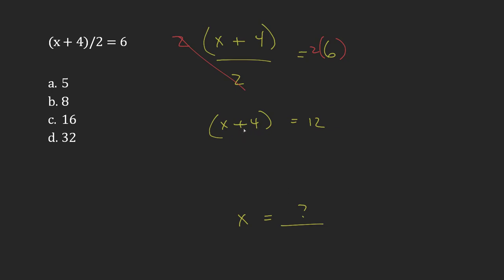Now I have to get rid of this addition of 4. And I can do that by subtracting 4. But not just from one side, from both sides. And so these cancel, leaving me just with x.